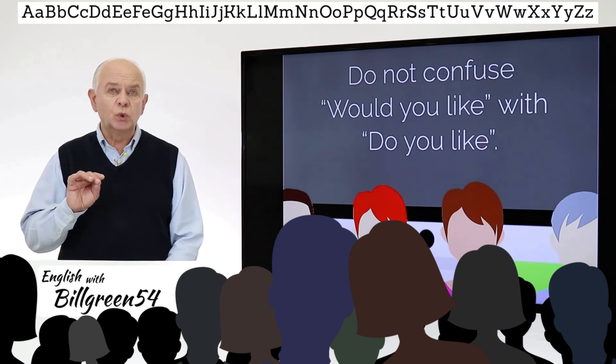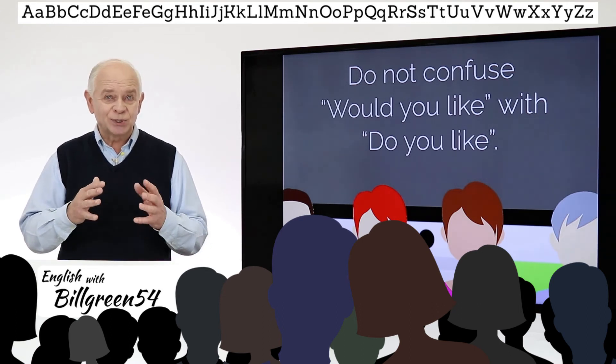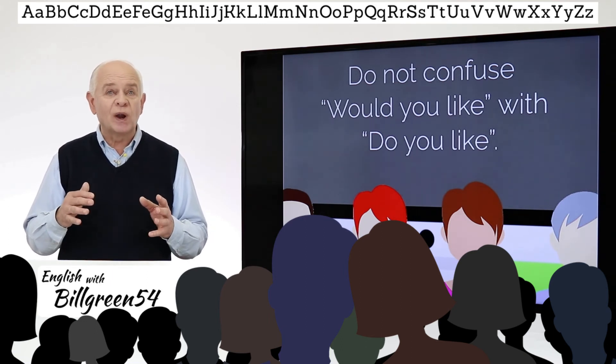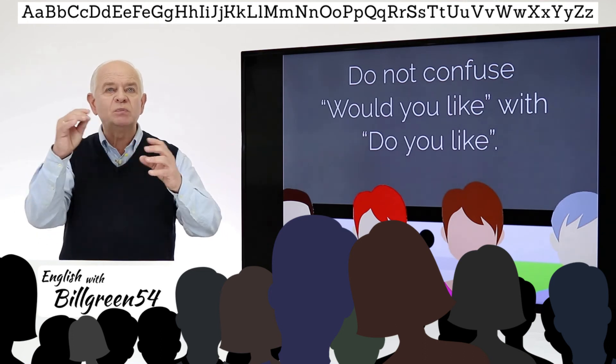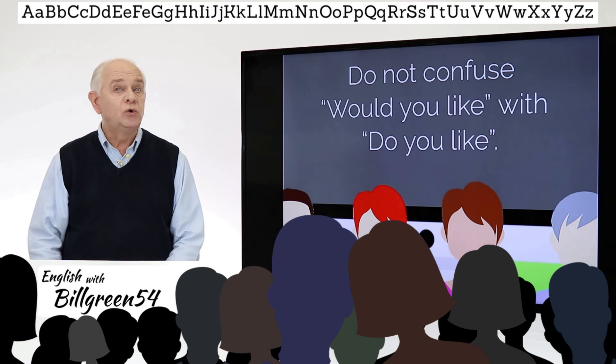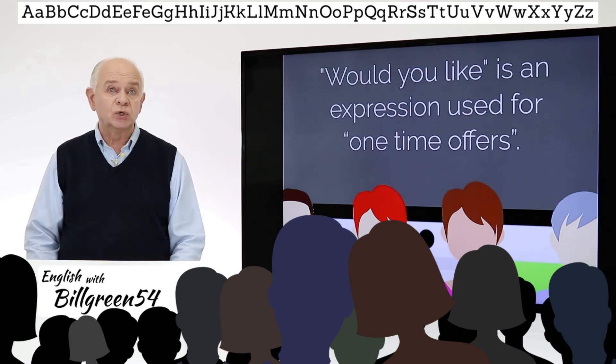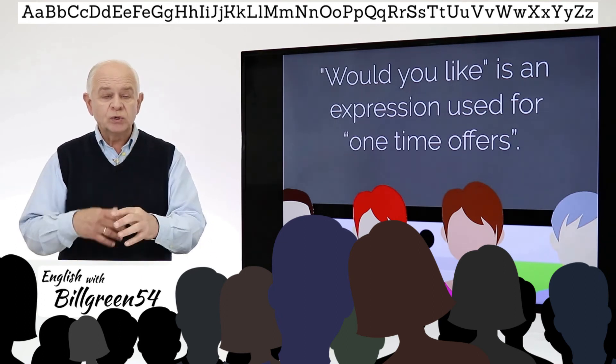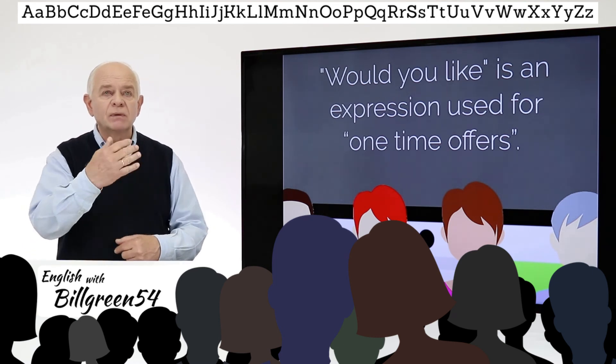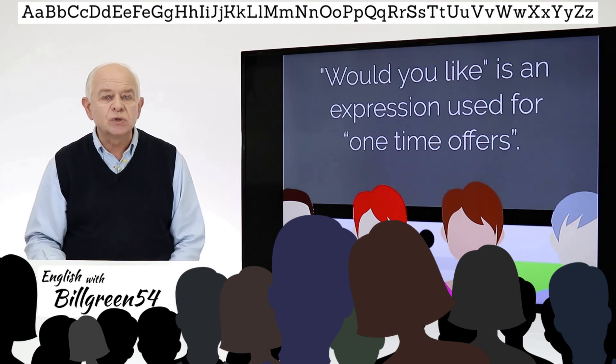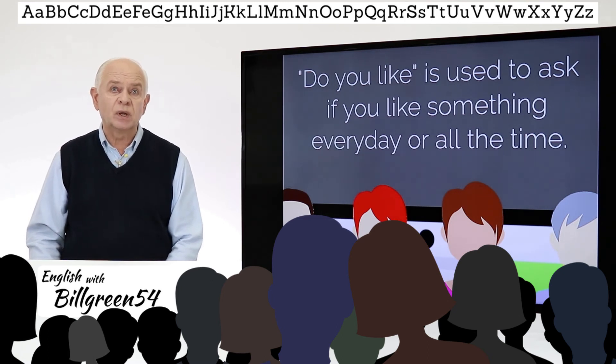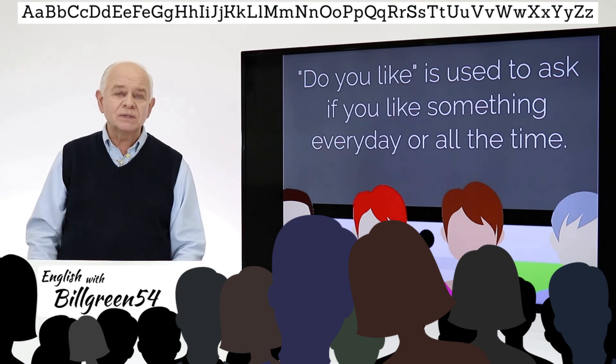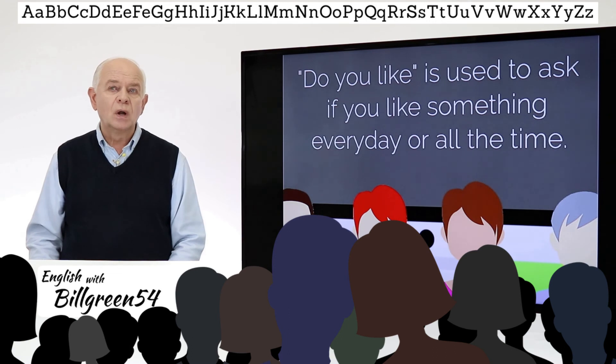Don't confuse 'would you like' with 'do you like.' Now we're getting into this grammar bridge, how we connect one level, one phrase, one type of grammar to another to help you speak better English. 'Would you like' is an expression used for a one-time offer. Would you like to go to the cinema tonight? Would you like to have some pizza right now? That's a one-time offer. 'Do you like' is used to ask if you like something every day or all the time. Do you like pizza? Yes I do. Every Friday we go out. Do you like exercising in the morning? Yes, of course, we go every day.